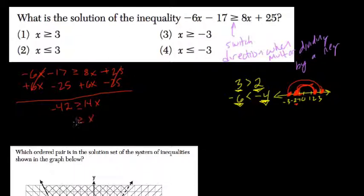and x is less than or equal to negative 3. So here we're looking for a value x is less than or equal to negative 3, which is choice number 4. It's just written in the reverse order.